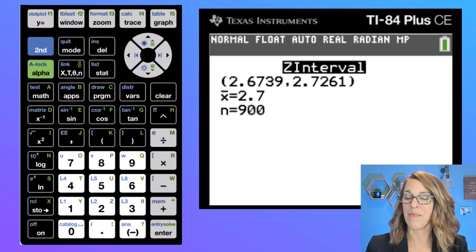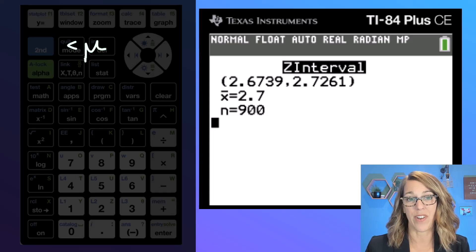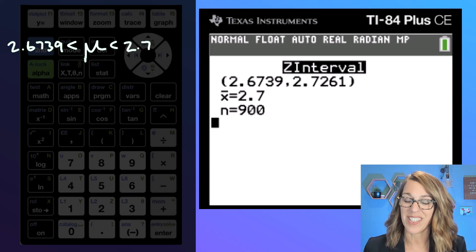And I get this interval. I'm 95% confident that the actual average GPA for freshmen is going to be between 2.6739 and 2.7261.